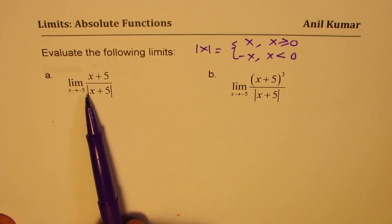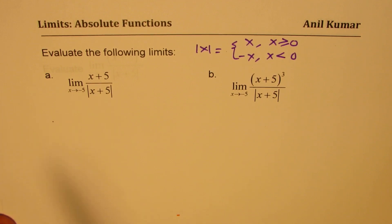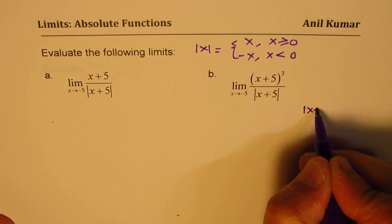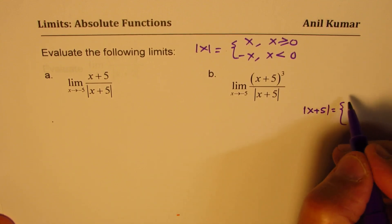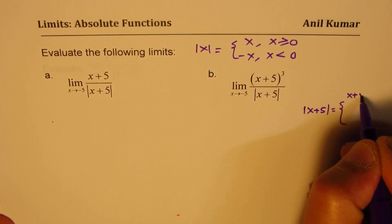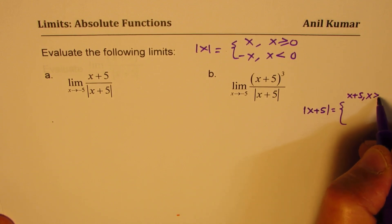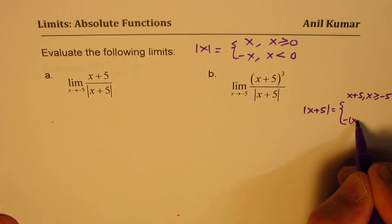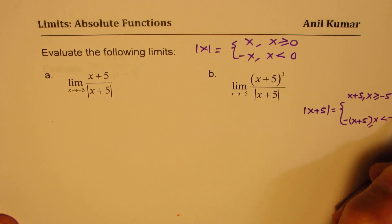Let's understand the function absolute value of (x+5). It means the function equals x+5 when x is greater than or equal to minus 5, and equals negative of (x+5) when x is less than minus 5.